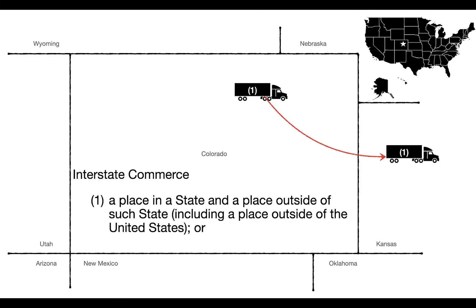I'm going to break these three points down using Colorado — it's a square, fits the screen well, and it's the home of Front Range Compliance Services and DOT University. Interstate commerce point number one: a place within a state to a place outside the state. The trip is shown by the red line on the route. That one is the obvious choice — everybody should understand how easy that one is.